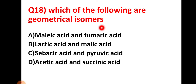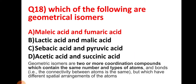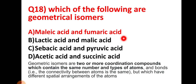Question number eighteen: which of the following are geometrical isomers? Options include maleic acid and fumaric acid, lactic acid and maleic acid, and others. The right answer is option A: maleic acid and fumaric acid. Geometrical isomers are compounds that contain the same number and types of atoms with the same bond connectivity, but differ in spatial arrangement.